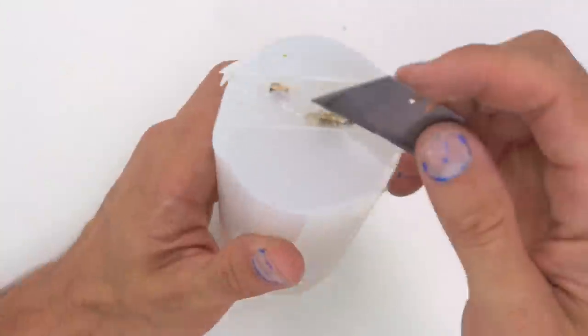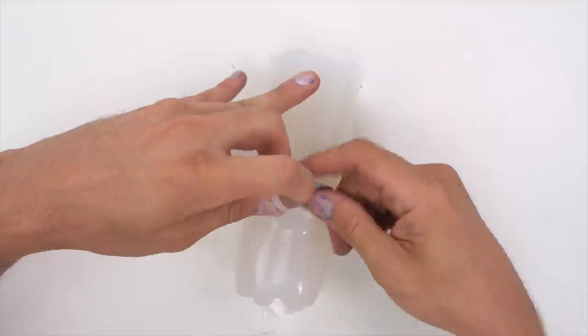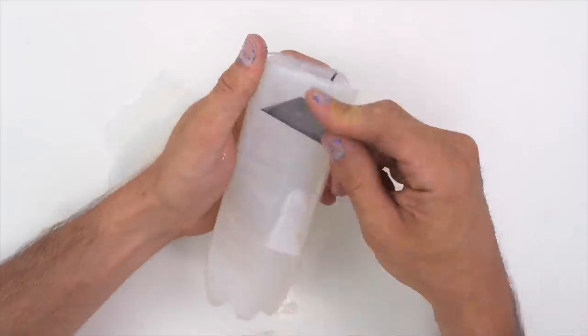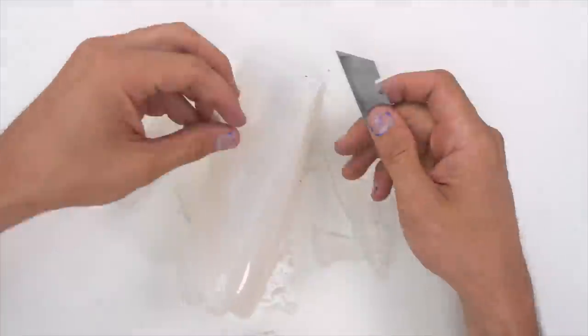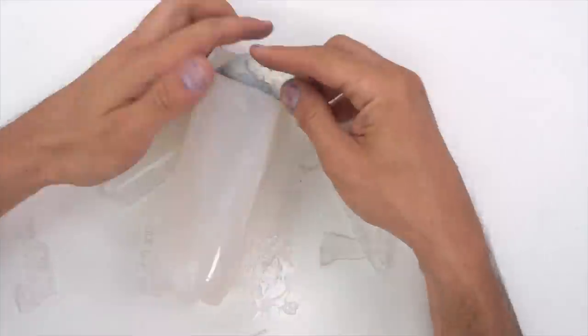This video is sponsored by Squarespace. So I think the sides of the mold were just too thick, so what we're gonna do is just shave it down with that razor blade. Just fillet it like it's some nice Alaskan cod.